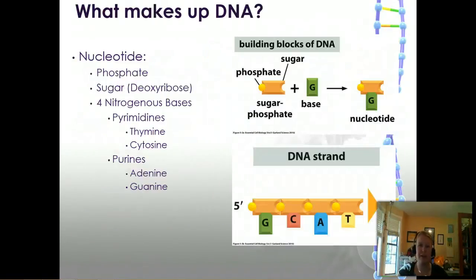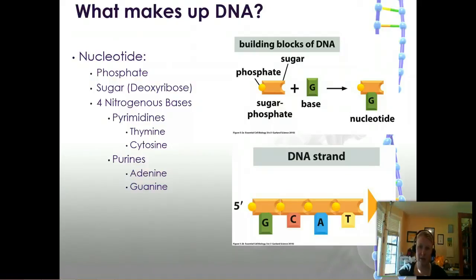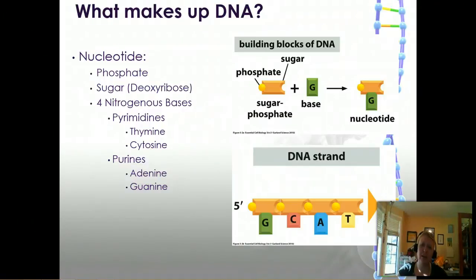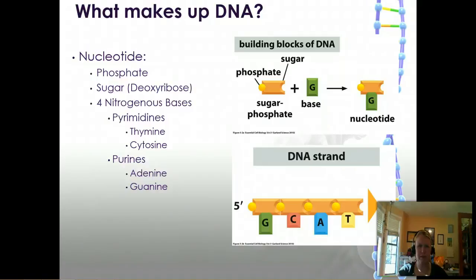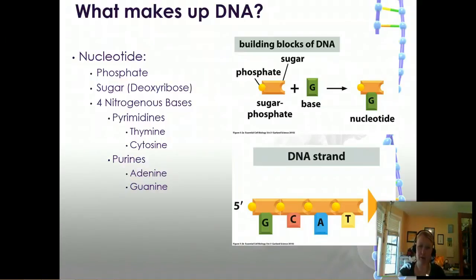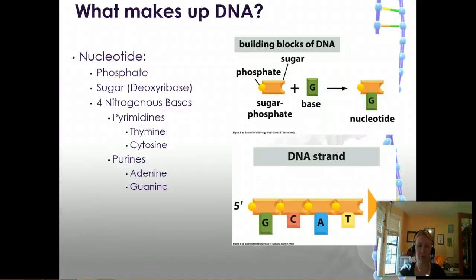Let's talk about what makes up DNA. The monomer of DNA is the nucleotide — the most basic building block of DNA — which contains a phosphate, a sugar, and one of four nitrogenous bases. The nucleoside is the sugar and base lacking the phosphate, just so you're aware of that definition difference. We have two groups of bases: pyrimidines, which are thymine and cytosine, and purines, which are adenine and guanine. They will always pair one pyrimidine to one purine.